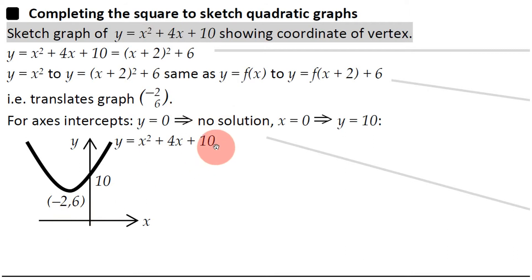And to find out where this graph crosses the y-axis, you find out when x equals 0, and you'll find the solution to that is y equals 10. So basically, this graph crosses the y-axis at 10. So in short, you get this graph, you get this quadratic graph.